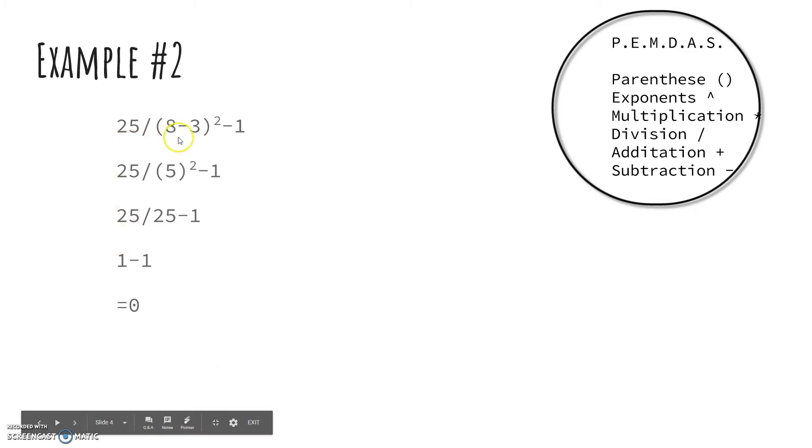Example number 2. So first you have to do what is in the parenthesis, so you do 8 subtract 3 is 5, so 25 divided by 5 to the second power subtract 1. So 5 to the second power is 25, so 25 divided by 25 is 1, and then you have to subtract 1, which is 0.